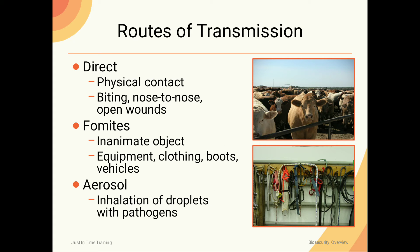Routes of transmission in biosecurity include direct transmission, such as physical contact, biting, nose-to-nose contact, open wounds, and fomites - contaminated objects like equipment, clothing, boots, and vehicles. Aerosol transmission involves inhalation of droplets containing pathogens from animals, which causes diseases.